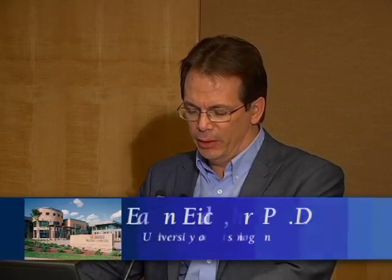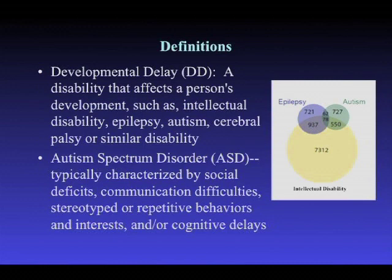I'm going to start with something fairly basic that will hopefully become more self-evident with a few definitions. I'll be talking mainly about our work with respect to developmental delay and autism. Developmental delay is an umbrella term meaning that kids aren't meeting milestones in a whole number of different areas. The most noticeable within a clinical realm is intellectual disability and milestones with respect to speech. This also includes things like epilepsy, autism, cerebral palsy and other disabilities.